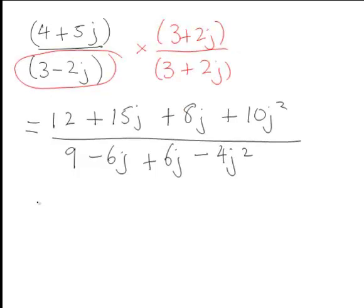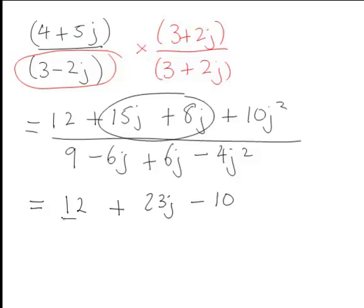And so looking at the numerator, 12 plus, that's going to become 23j minus 10 when we simplify the 10j squared. And on the denominator we're just going to be left with 9, and negative 4j squared will simplify to plus 4.